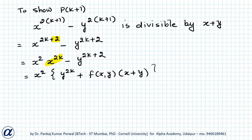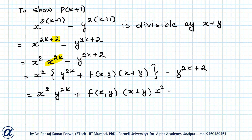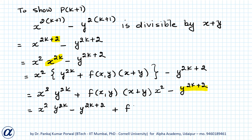This gives x squared into y to the power 2k plus f(x,y) into x plus y into x squared minus y to the power 2k+2. Rearranging, this equals x squared times y to the power 2k minus y to the power 2k+2 plus f(x,y) into x plus y into x squared. Taking y to the power 2k common, I'm left with x squared minus y squared.